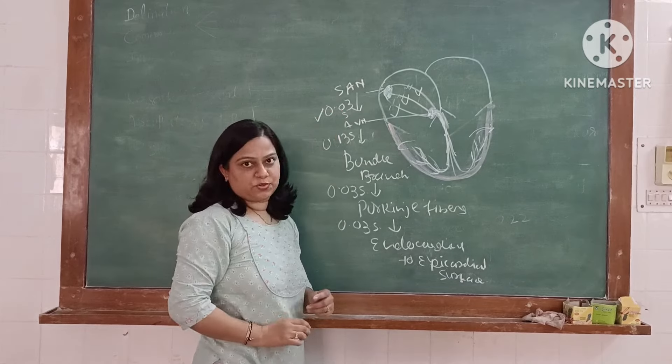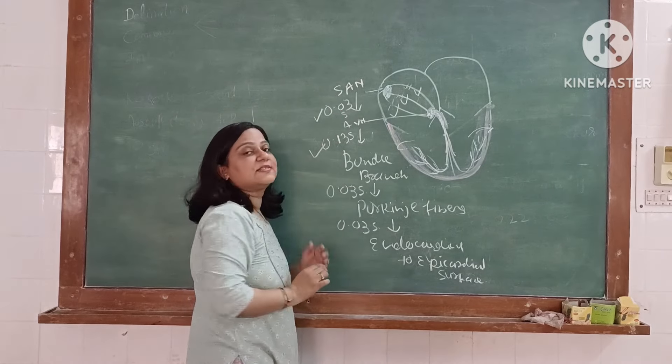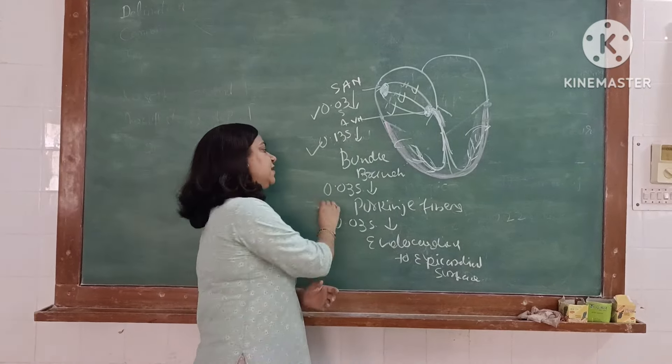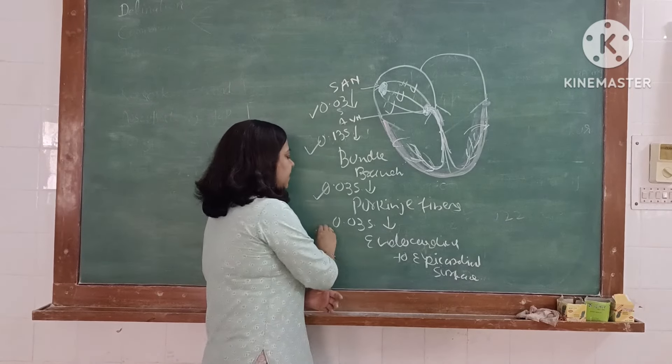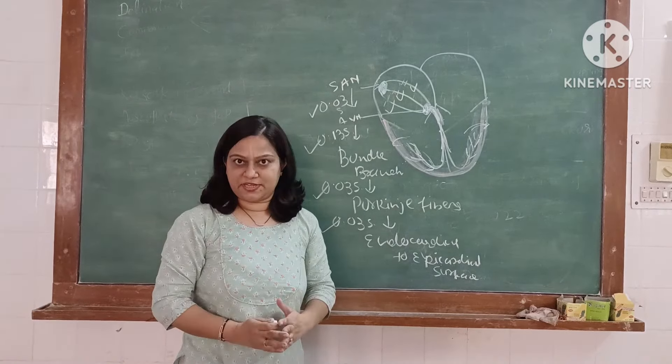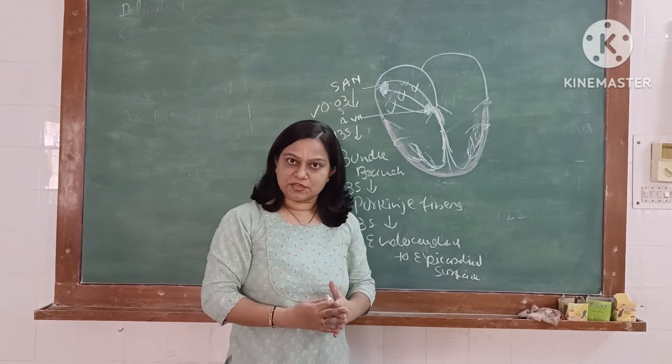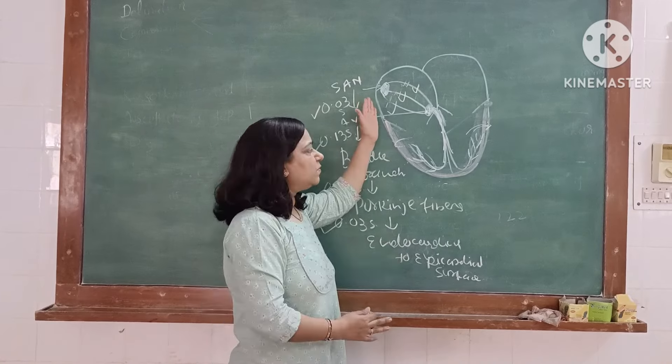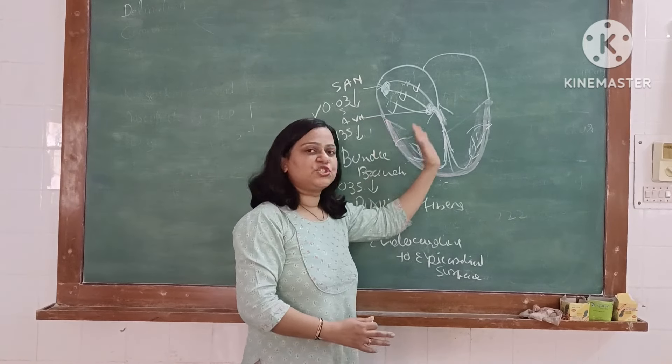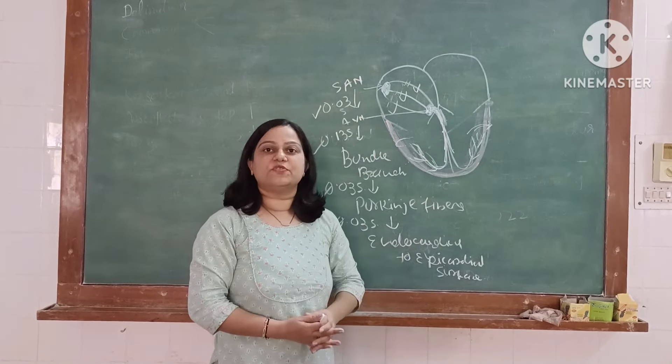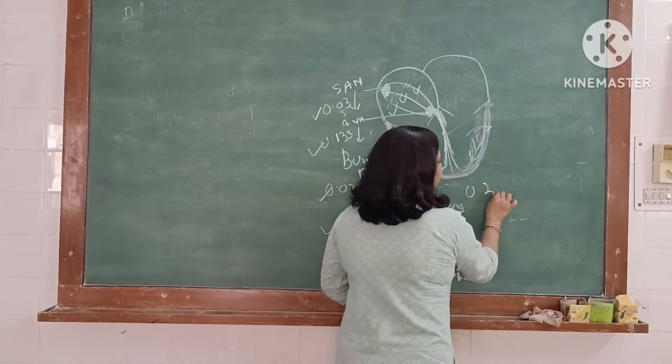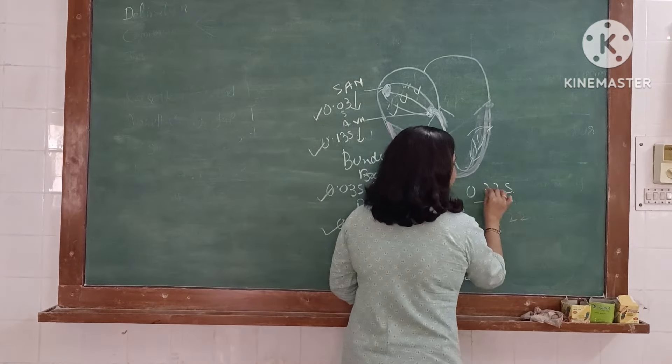So, 0.03 second plus 0.13 second plus 0.03 second plus 0.03 second. Total time taken for the conduction of impulse from the SA node to reach the epicardial surface of the ventricle is 0.22 second.